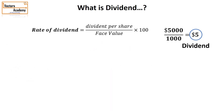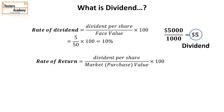There are two important ratios to understand. The rate of dividend is calculated as dividend per share — five dollars — divided by the face value of fifty dollars, multiplied by one hundred, which comes to ten percent. The rate of return, when shares are purchased at market value, is calculated as dividend divided by the purchase value or investment, multiplied by one hundred, which comes to 8.33%. These are the key aspects: face value, market value, discount, premium, rate of dividend, and rate of return.